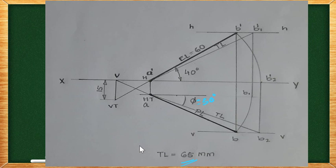Theta is equal to 30 degree and we have a vertical trace and horizontal trace.